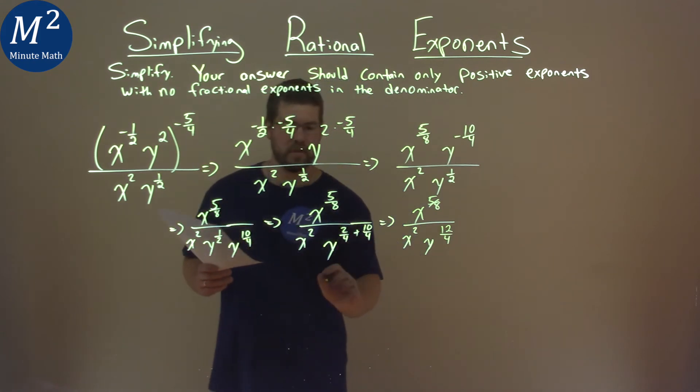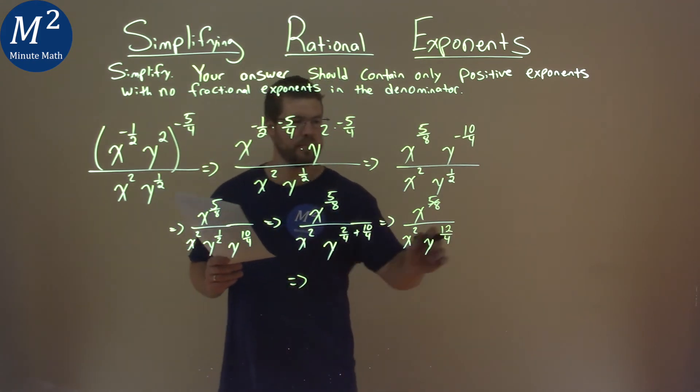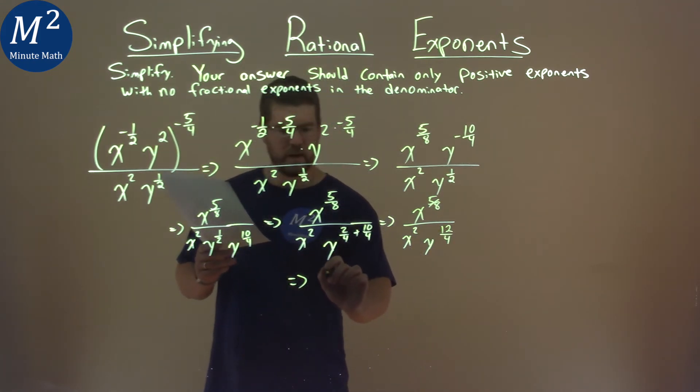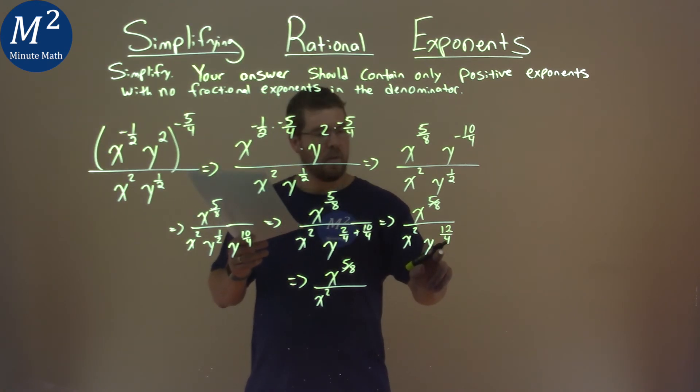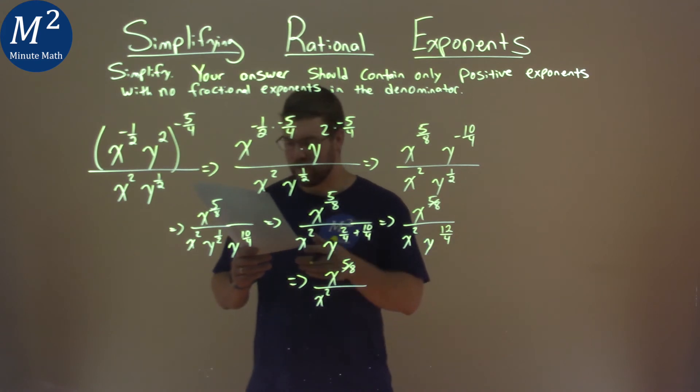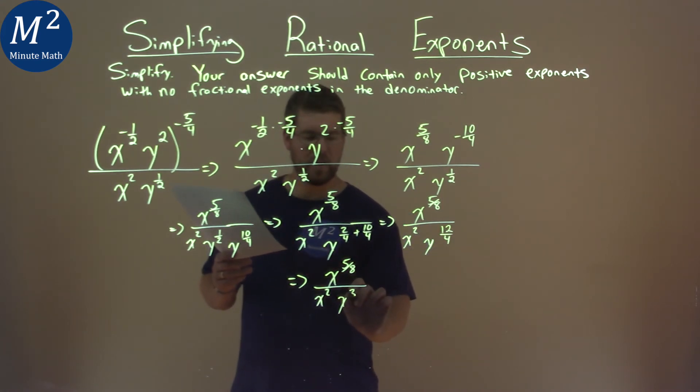But we're not done, almost there. Let's go simplify that exponent right here. So we have x to the five-eighths stays here in the numerator. In the denominator, we have x squared, and then y to, twelve-fourths power is the same thing as to the third power. So we have y to the third power here.